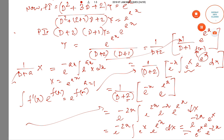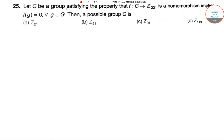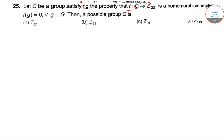For the next question: let G be a group satisfying the property that any homomorphism f from G to Z_221 implies f(g) = 0 for all g in G. We are given possible group orders and need to find which is correct.